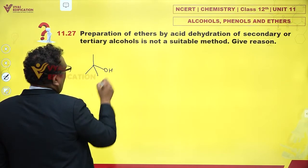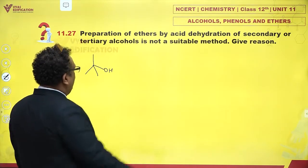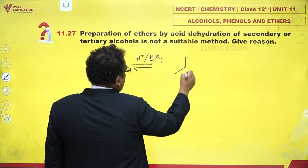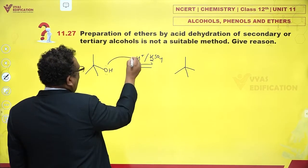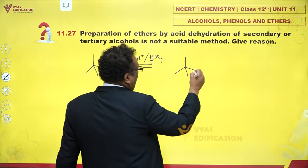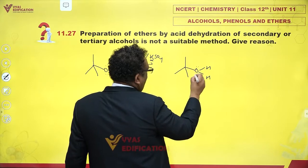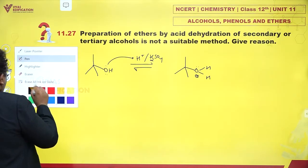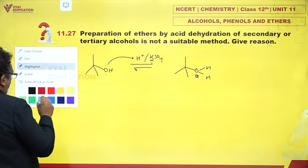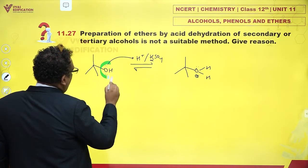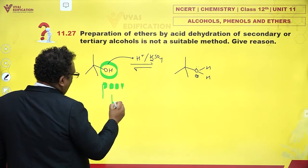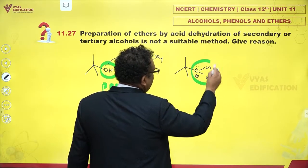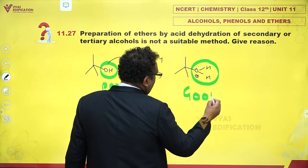Let us take tertiary butyl alcohol as an example. The moment we use H⁺ from H₂SO₄, a lone pair is donated by the OH group to H⁺, and I get OH₂⁺ like this. The OH group, which was a poor leaving group, now becomes a good leaving group.